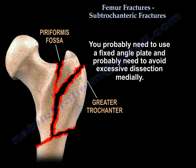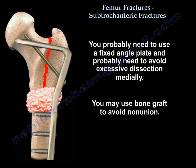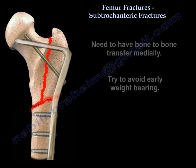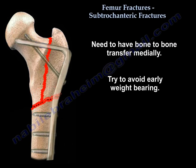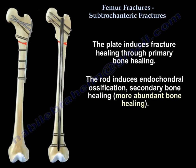When the fracture extends to those areas, you will likely need to use a fixed-angle plate, avoid excessive medial dissection, and possibly use bone graft to avoid nonunion. Bone-to-bone contact medially is essential, and early weight bearing should be avoided. The plate induces primary bone healing, while the rod induces endochondral ossification — secondary bone healing — which produces more abundant bone healing.